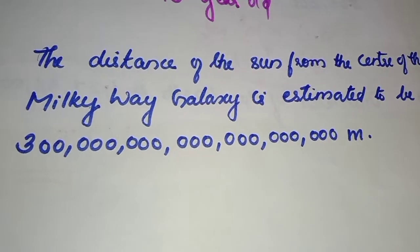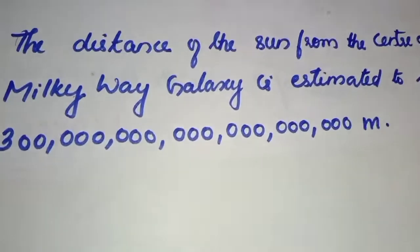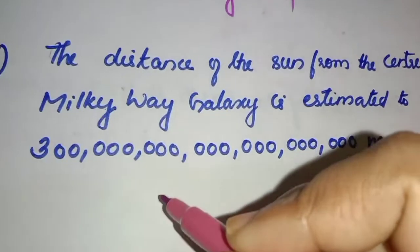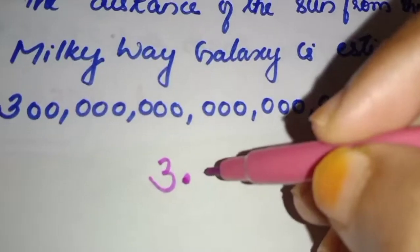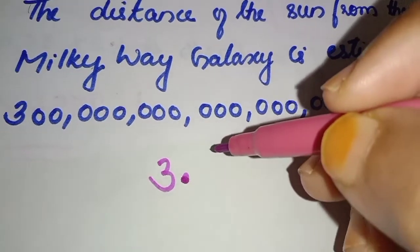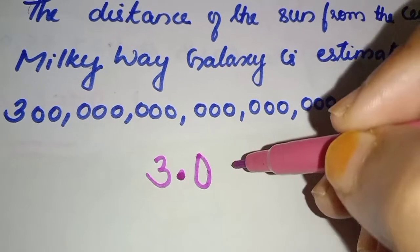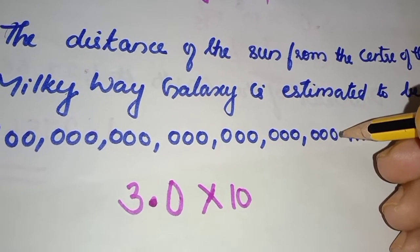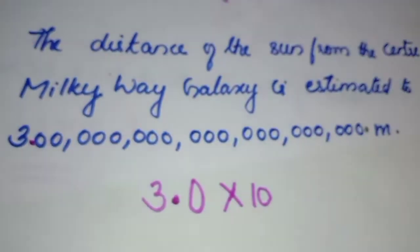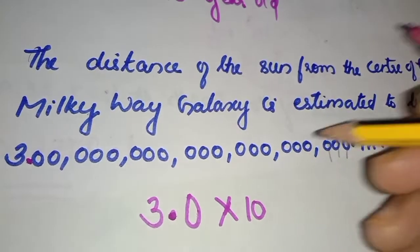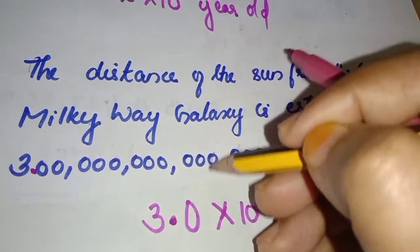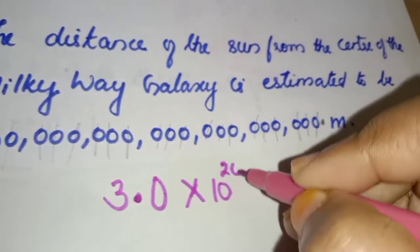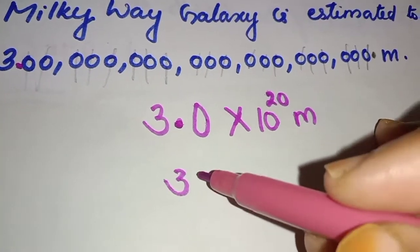The distance of the sun from the center of the Milky Way galaxy is estimated. We look at the distance and count. We place the decimal after the first digit. We count how many numbers we shift: 1, 2, 3, 4, 5, 6, 7, 8, 9, 10, 11, 12, 13, 14, 15, 16, 17, 18, 19, 20. So the power is 20.